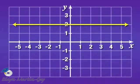Let's look at this graph. It is a horizontal line. We just need to decide whether it passes the vertical line test. If it passes the vertical line test, it is the graph of a function.